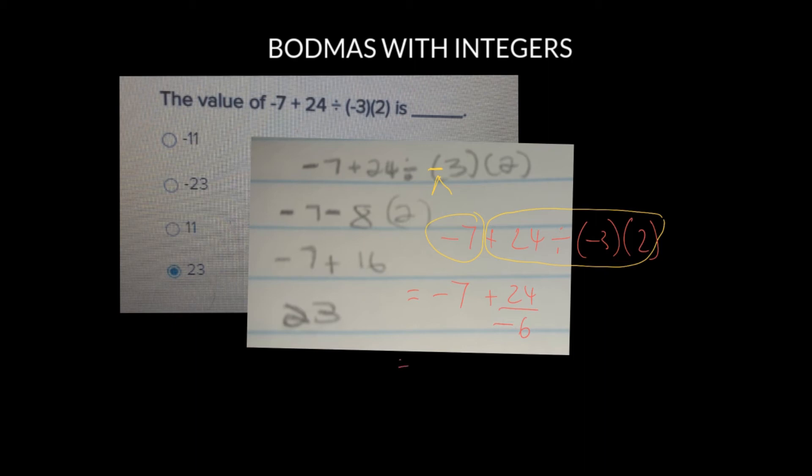Okay, so in our next line, negative 7, when we divide a positive number by a negative, we get a negative and 24 divided by 6 is minus 4. Okay, 24 divided by 6 is minus 4.